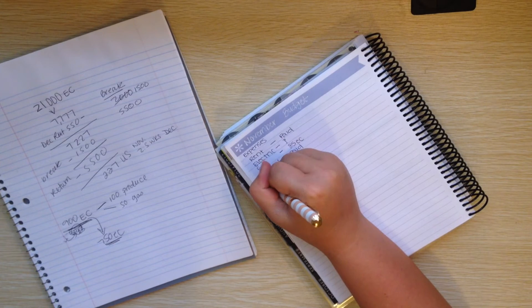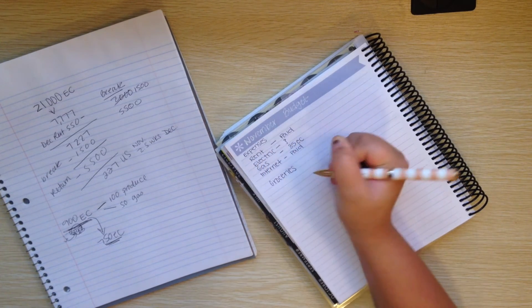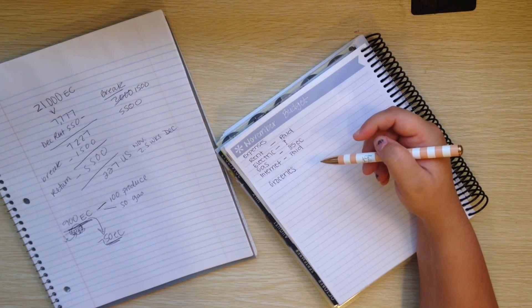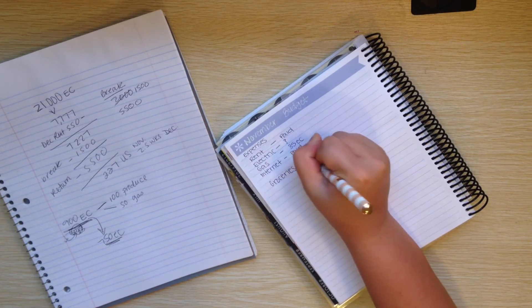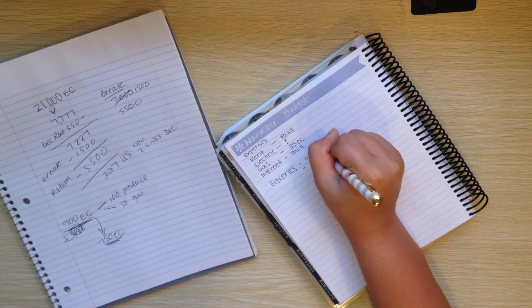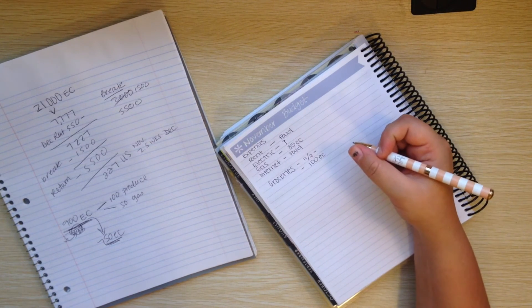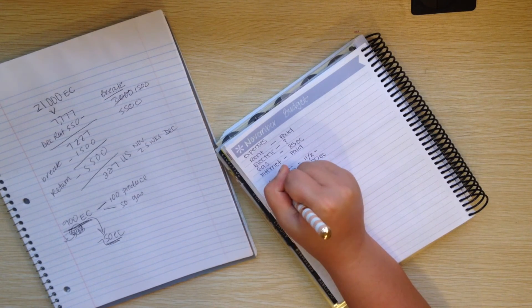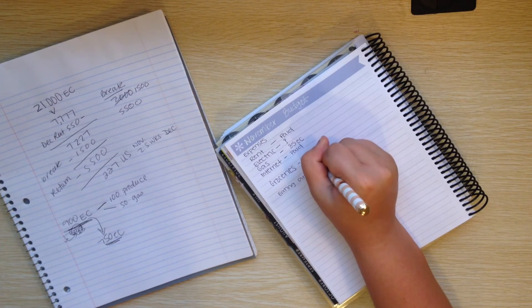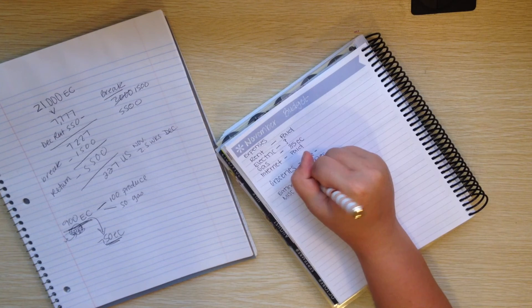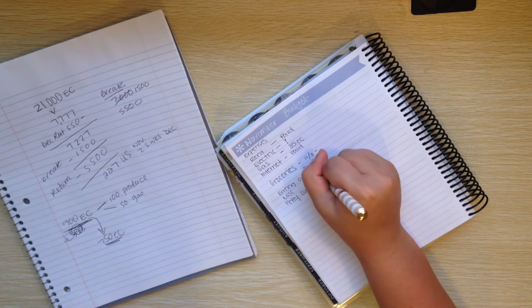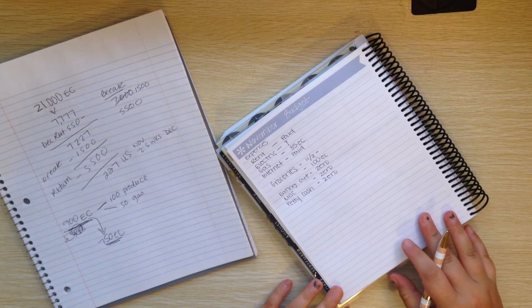Okay so groceries, I did do a big grocery shop at the beginning of the month and I don't remember how much it was, I'll just write the date so that I can write it down. That'll be cash that I give myself for that. And then eating out hopefully 0, miscellaneous 0.